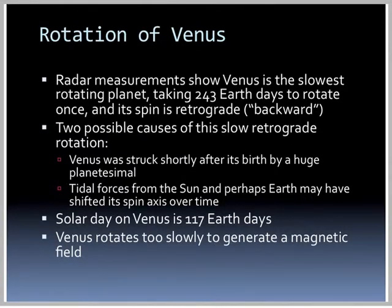Radar measurements show Venus is the slowest rotating planet, taking 243 Earth days to rotate once, and its spin is actually retrograde — backward from the rest of the planets. Two possible causes: Venus was struck shortly after its birth by a huge planetesimal, or tidal forces from the Sun and perhaps Earth shifted its spin axis over time. The solar day on Venus is 117 Earth days, and Venus rotates much too slowly to generate a magnetic field.